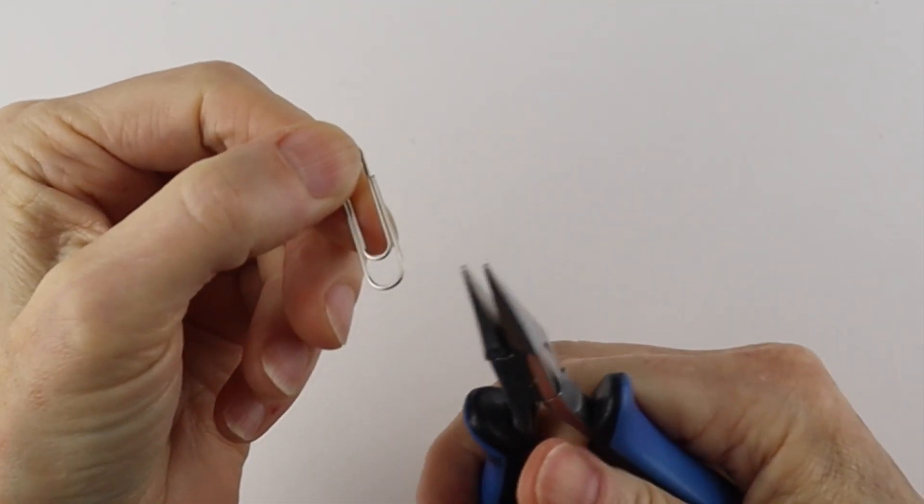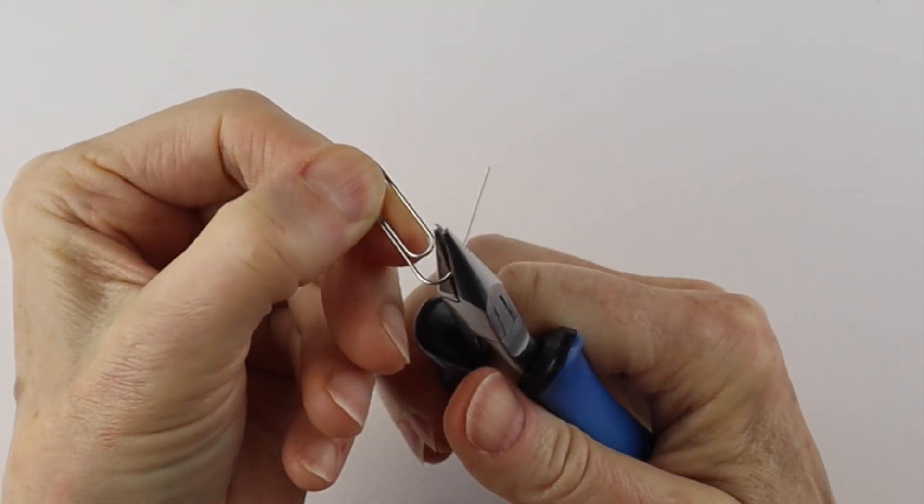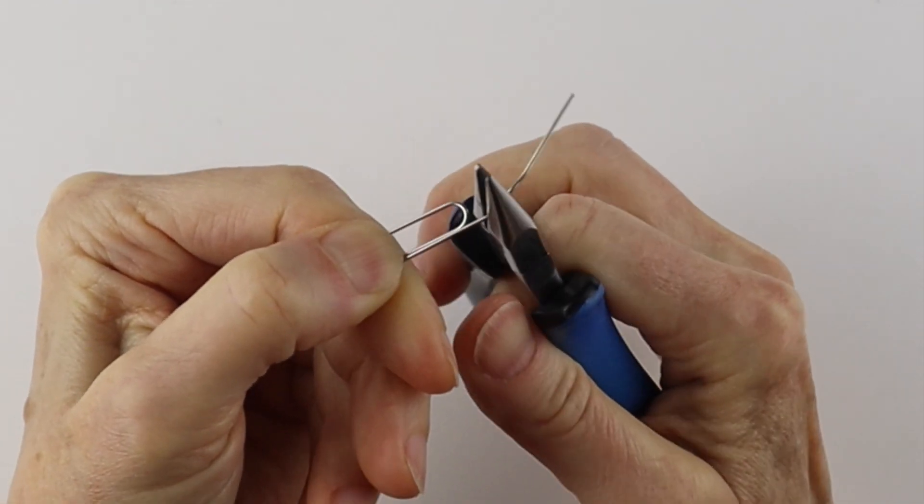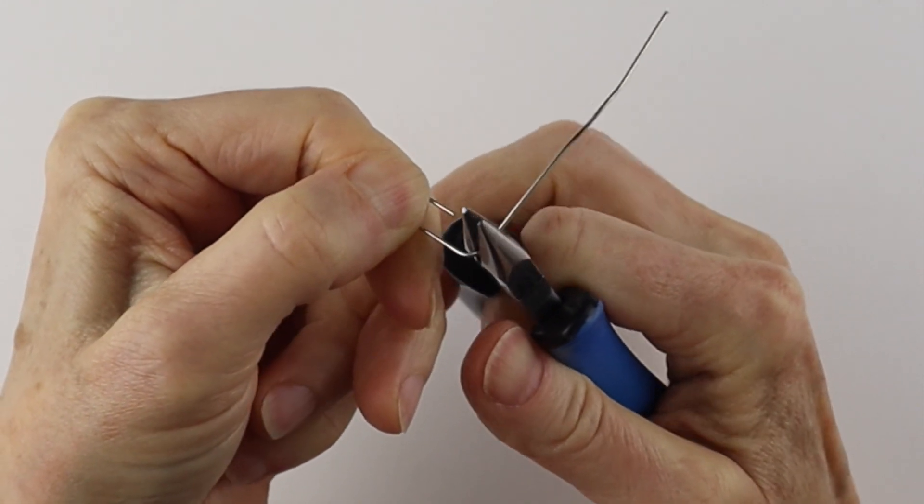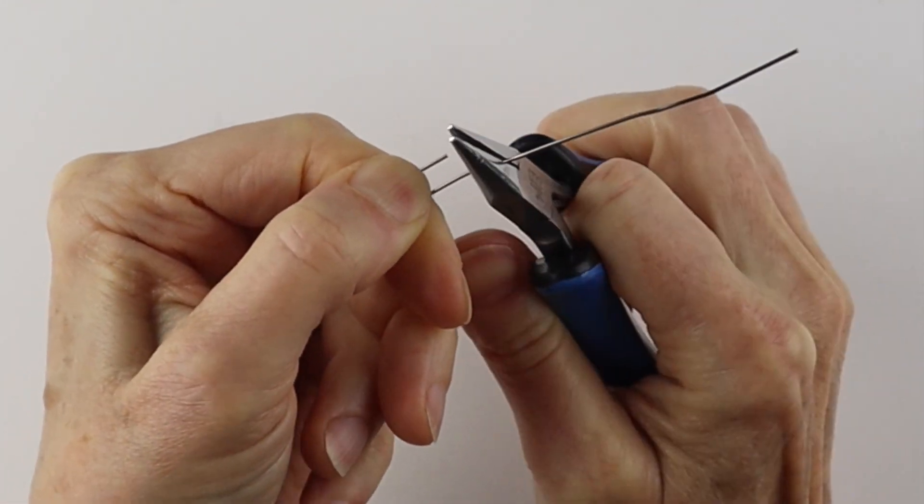We always start with opening up the paperclip with our flat pliers. You can do this by hand, but it's easier to do with the pliers. So just go slowly and pinch it along as you go.